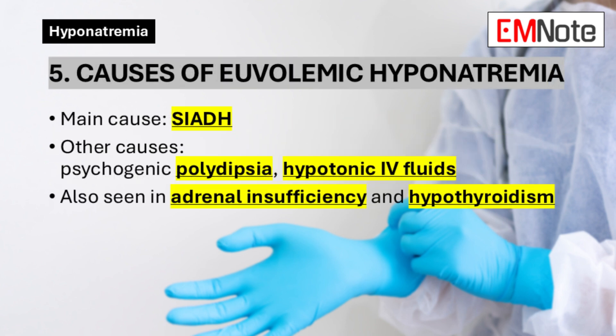Point 5: Causes of Euvolemic Hyponatremia. The most common cause of euvolemic hyponatremia is the syndrome of inappropriate antidiuretic hormone secretion (SIADH), which leads to increased water retention. Other causes include psychogenic polydipsia, hypotonic intravenous fluid therapy, adrenal insufficiency, and hypothyroidism.